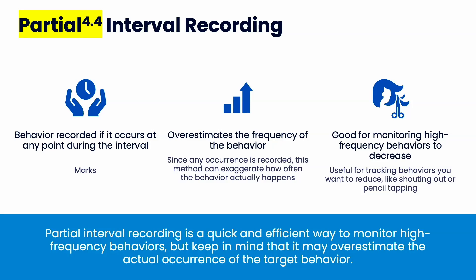Partial interval recording is the one you'll use most often. Most people are taking partial when they say they're doing interval recording. You get to mark yes if the behavior occurs at any point in the interval — it doesn't matter if it's a second, the whole interval, or half the interval, it's always going to be yes if you see the behavior. The second you're in your interval and you see behavior, you mark yes and you're essentially done for that interval. Unfortunately, partial overestimates the frequency of behavior because you're marking yes even if you only see one second of behavior.